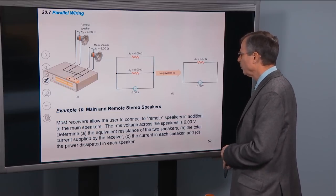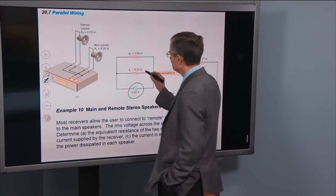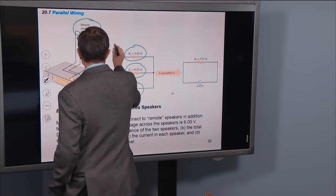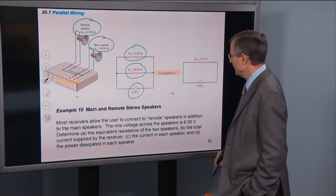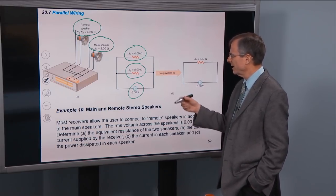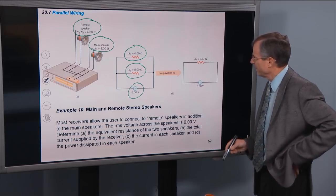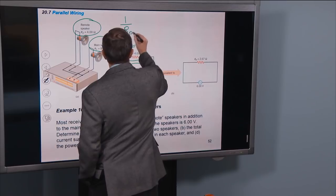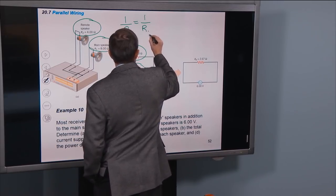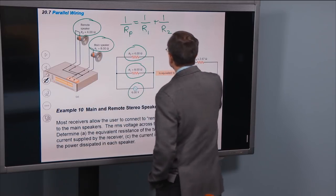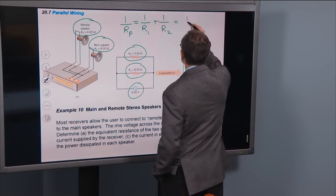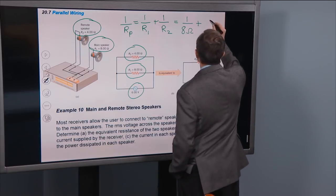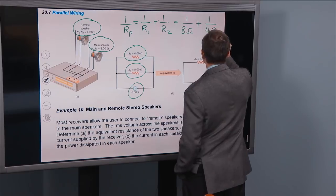Let's do a real problem. Here's a voltage source with two resistors representing a remote speaker and a main speaker: one is 4 ohms and the other is 8 ohms. We want to find the equivalent resistance. Instead of adding the resistances directly, we add their reciprocals: 1 over Rp equals 1 over R1 plus 1 over R2. Plugging in: 1 over Rp equals 1 over 8 ohms plus 1 over 4 ohms.